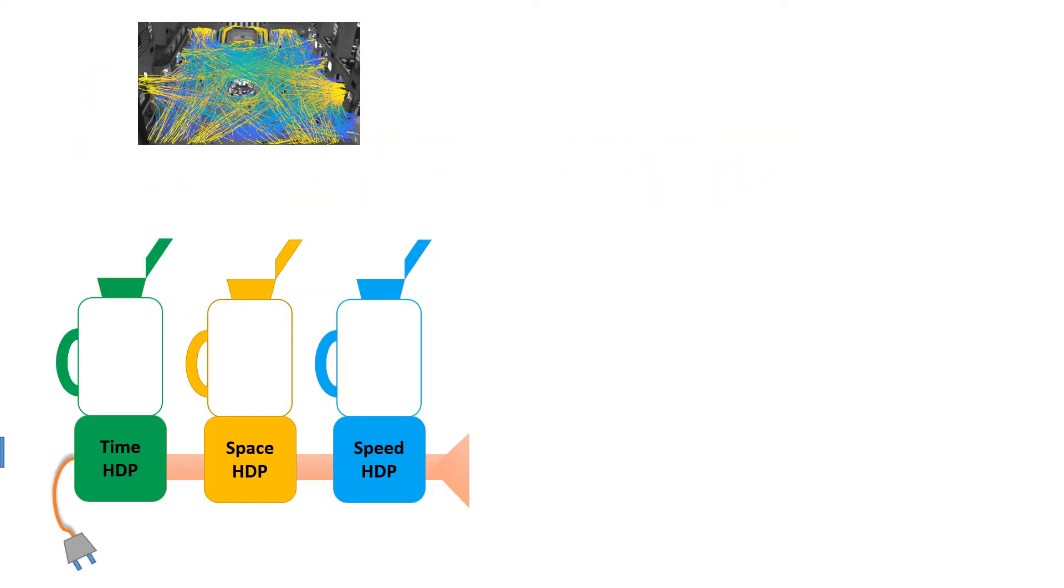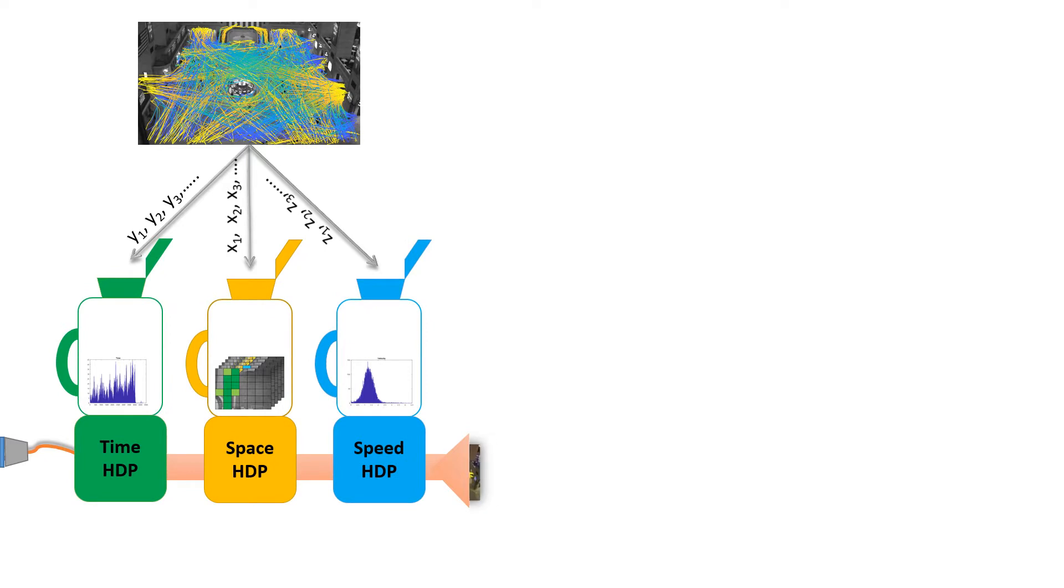Our framework starts with a Bayesian model called Triplet Hierarchical Dirichlet Processes, or THDP. THDP takes raw trajectories as input and uses three HDP models to model the space, time, and speed information. The three HDPs are linked so that space, time, and dynamics information is analyzed together.